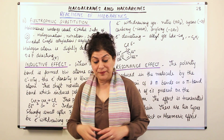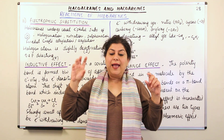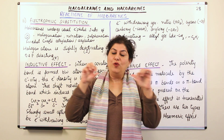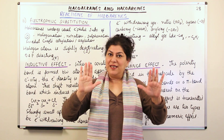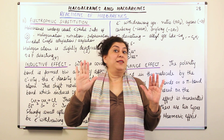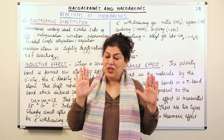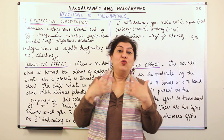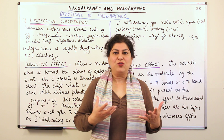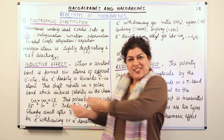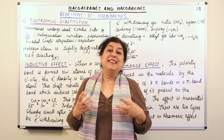Let's talk about inductive effect. When there is a chain of atoms connected to each other through covalent bonds and they have different electronegativities, whenever there is a difference in electronegativity, the more electronegative atom has a tendency to pull the shared pair of electrons towards itself. When we say electronegative, we mean electron-deficient — it needs to pull the electrons towards itself. So we say it is electronegative, and it pulls the shared pair of electrons towards itself, thereby leading to a polarity in the bond.